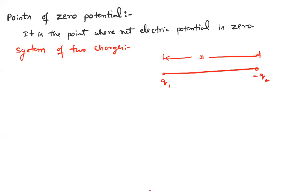There are just two points in the region where electric potential is zero. One lies in between the two charges, and the other lies outside — on the far side of one of the charges. Let the two charges be A and B. P is the point between them where electric potential is zero, and Q is the other point outside. Note that the zero potential point is always closer to the smaller magnitude charge. Assume magnitude of q1 is less than q2.